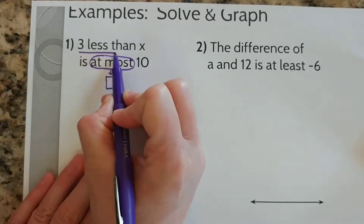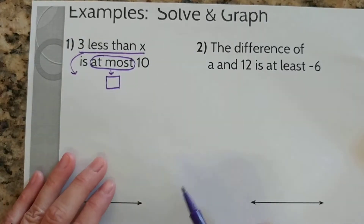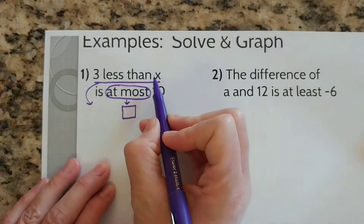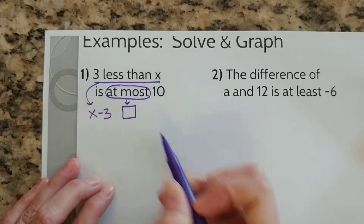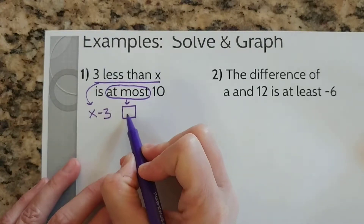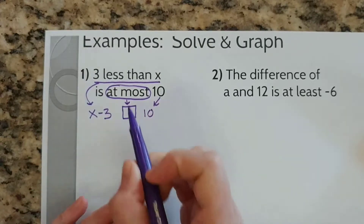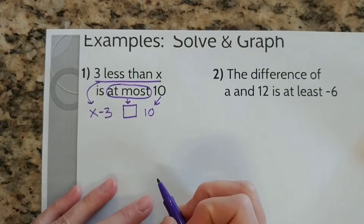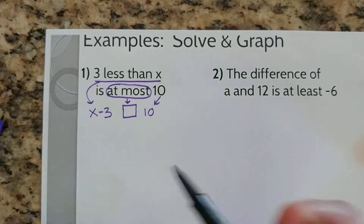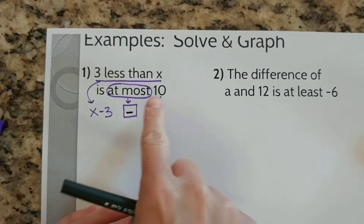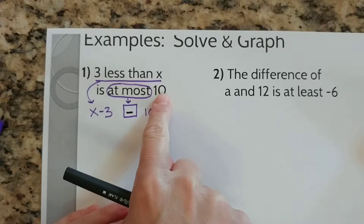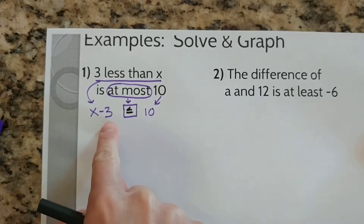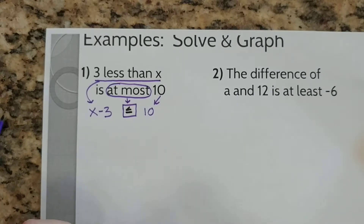Let's take "3 less than x" — that is going to go right here. How do I write 3 less than x? Remember, "less than" is a turnaround word. So 3 less than x is x minus 3, is at most 10. Think of the word "at most" — at the very most, it could be 10. So could it be equal to 10? Yeah, it could, but that would be the very most. So I'm going to put "equal to." If 10 is the very most, it can't be more than that, so this would have to be less than 10. So x minus 3 is less than or equal to 10. Now I have an inequality.